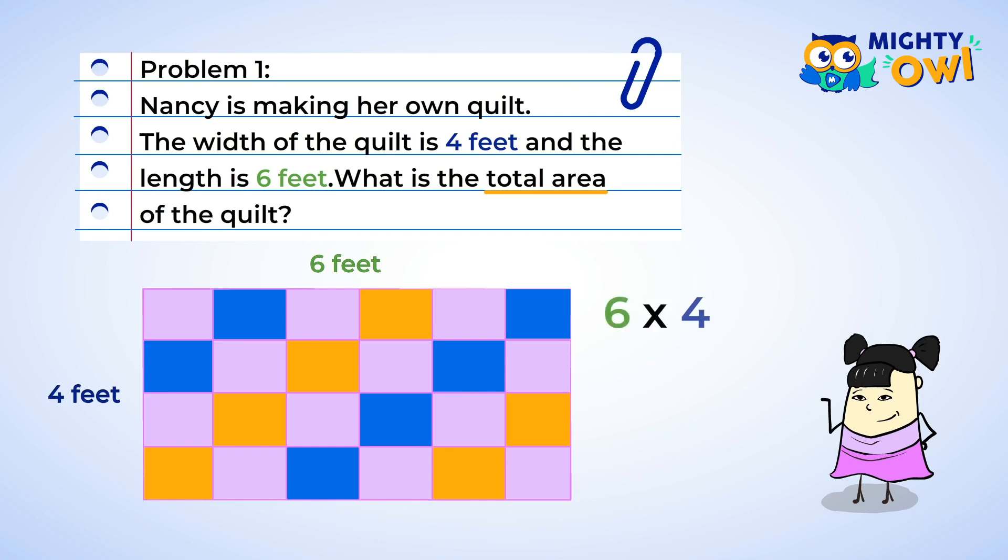Four multiplied by six is equal to 24. Nancy's quilt has an area of 24 square feet. There we go. And we can also draw it out to show the squares. Great work. Let's keep going.